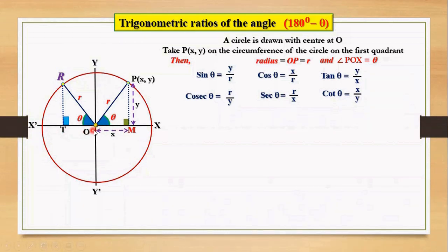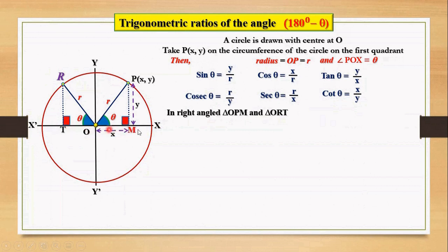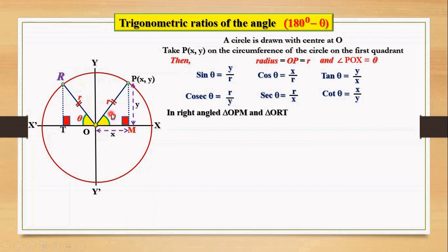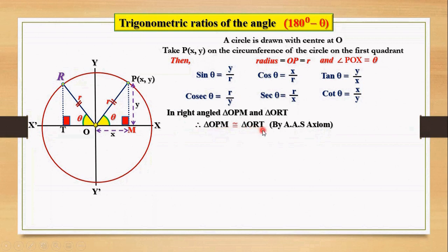Now we have two triangles OPM and ORT. In both of these right angle triangles, we have these two angles equal because both of them are right angles. And also these two angles ROT and POM are equal because both of them are equal to theta. And the side RO equals PO because both of them are the radius. So by AAS, they are congruent — triangle OPM is congruent to triangle ORT.